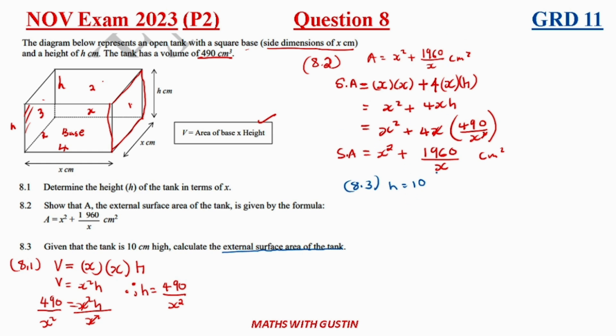So now we need to calculate x first so that we are able to get this. So remember initially from 8.1 we said h is equal to 490 all over x squared. So now they've given h as 10. So we need to find x here. Therefore we can cross multiply. If you cross multiply you're going to have x squared, 10 is equal to 490 divided by 10. Therefore you're going to have x squared is equal to 49. If you take a square root on both sides, therefore x is equal to 7.